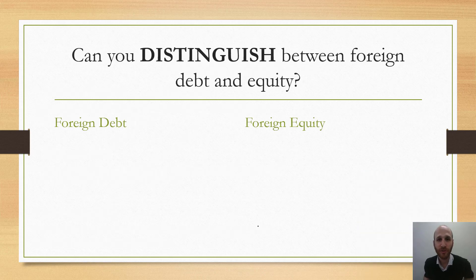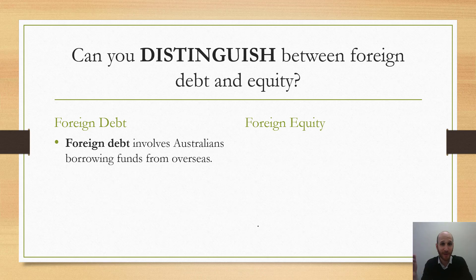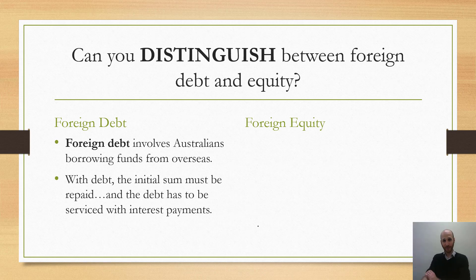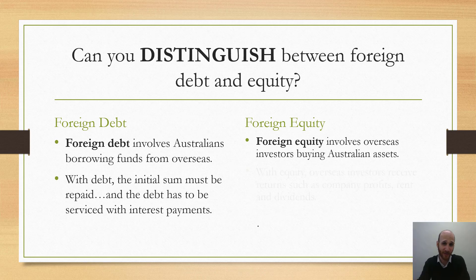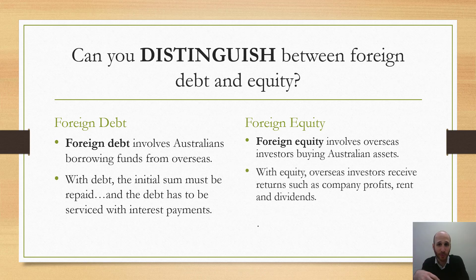It's really important that you can distinguish between foreign debt and foreign equity — it's crucial. Foreign debt is about borrowing funds; the initial amount has to be repaid and the debt has to be serviced with interest payments. Foreign equity involves overseas investors buying Australian assets, and these investors have to be rewarded with returns such as company profits, rent, and dividends.